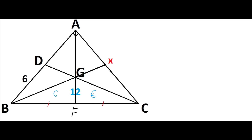F is a median, so the area of each triangle will be six — six and six. We also know that the point of intersection of medians divides the area of the big triangle into equal areas. So it will be six, six, six — all six.